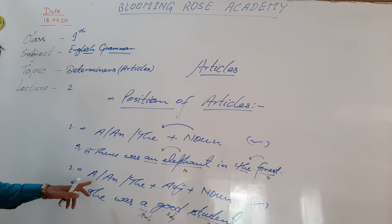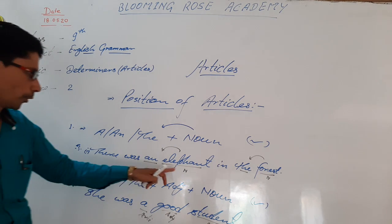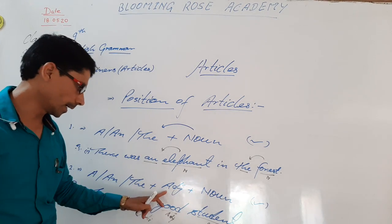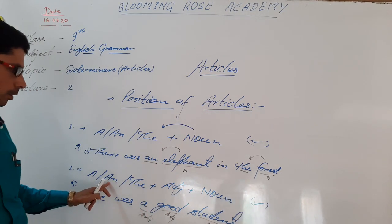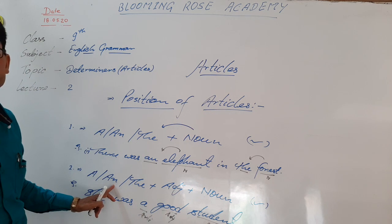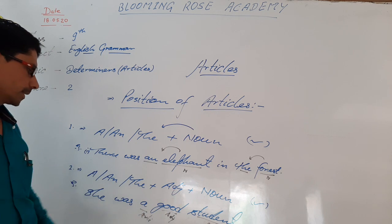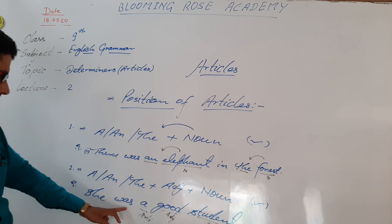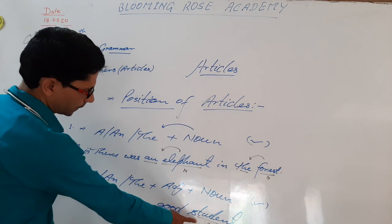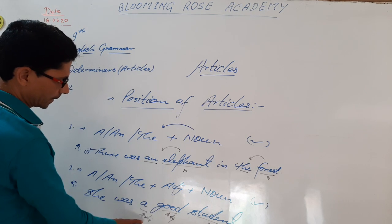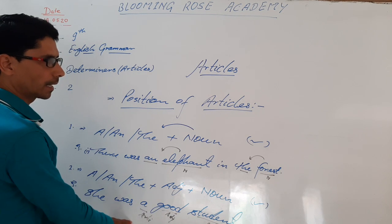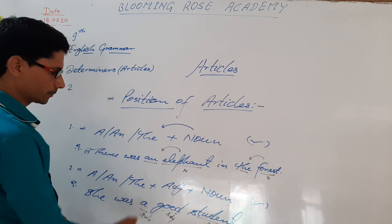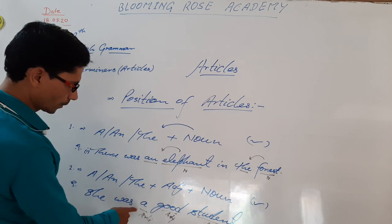Second rule: if before the noun an adjective is given, then the article is used just before the adjective — not just before the noun, but just before the adjective. The article is chosen according to the sound of the adjective. For example: 'She was a good student.' Here, student is a noun and good is an adjective, so 'a' is used just before the adjective.